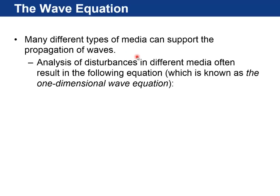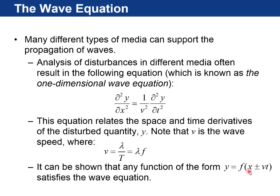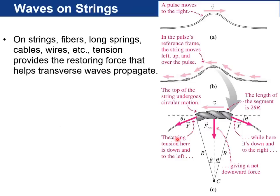I want to talk briefly about the wave equation. Many different types of media can support the propagation of waves. And if you analyze disturbances in different kinds of media, you'll always end up with the same basic differential equation, which is the second space derivative of some property is proportional to the second time derivative of that same property. And the proportionality constant turns out to be related to the speed of the wave, 1 over v squared. This equation relates to the space and time derivatives of some disturbed quantity, and v is the wave speed, which was lambda times f. Any function of the form f of x plus or minus vt can be substituted into this equation and will solve the wave equation. So it's not just sinusoidal waves. It could also be pulses. It could also be very complicated waves, such as sound or something. They will all travel along at the same speed, v.